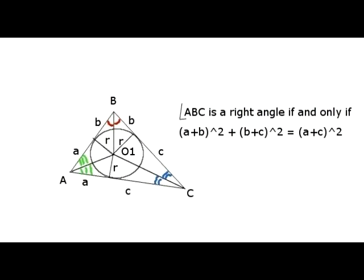Before we get to the excircles, let's draw an arbitrary triangle ABC and its incircle with center O1, and denote small letters a, b, and c to be distances between the points of tangency and vertices A, B, and C of this triangle respectively. The Pythagorean theorem implies that to prove triangle ABC is a right triangle with, for example, angle ABC being a right angle, it's sufficient to prove the equality (a+b)² + (b+c)² = (a+c)².